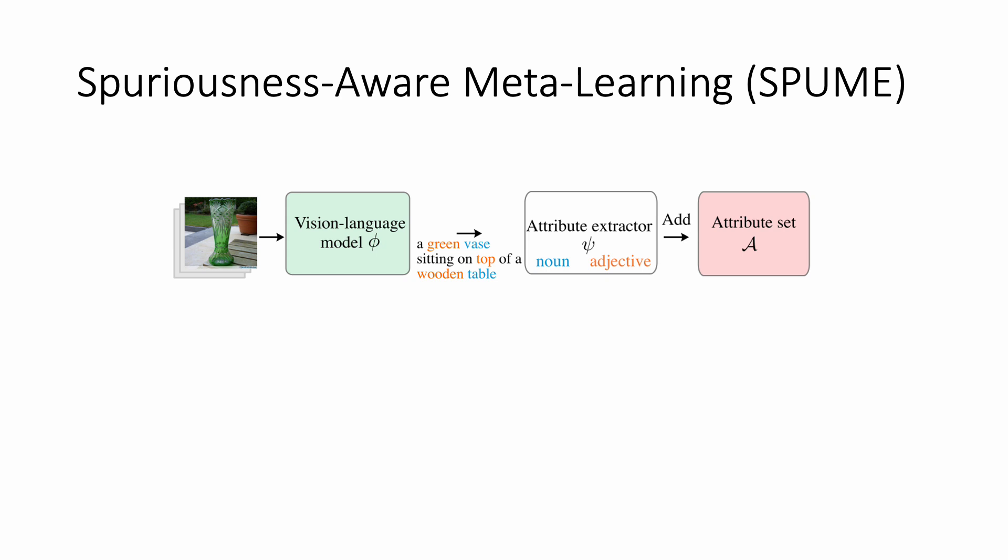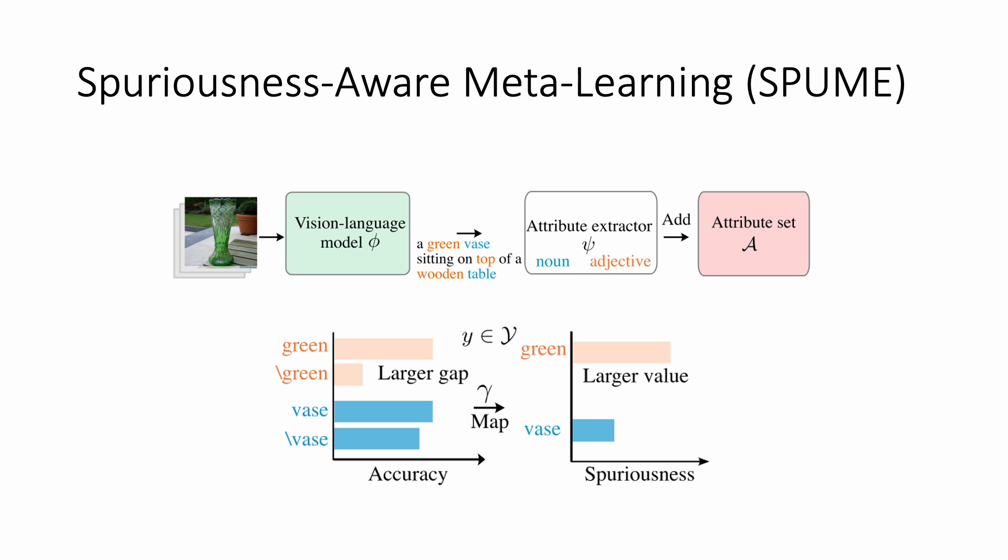To address this, we propose an automatic spurious correlation detection and mitigation method called SPUME. Our method uses a pre-trained visual language model to extract informative attributes and relates the spuriousness to the accuracy gap on samples with and without attributes.